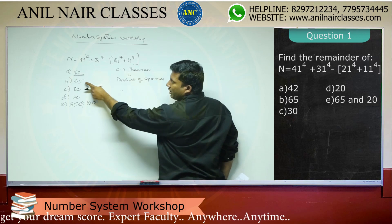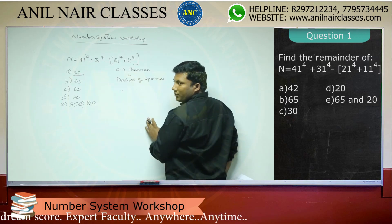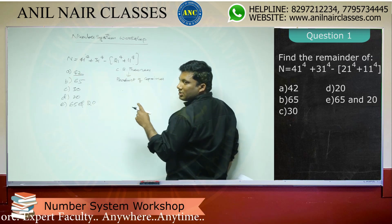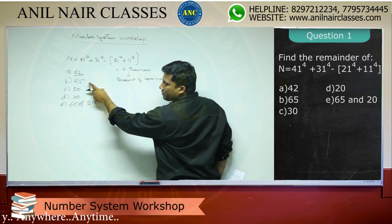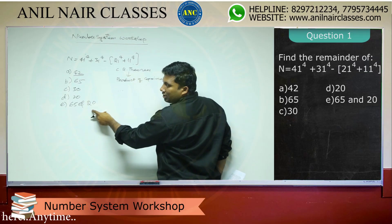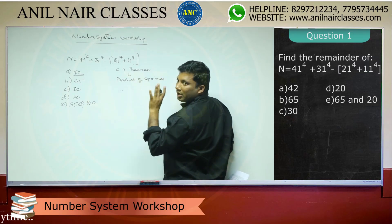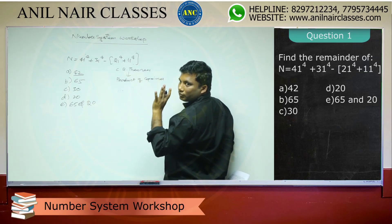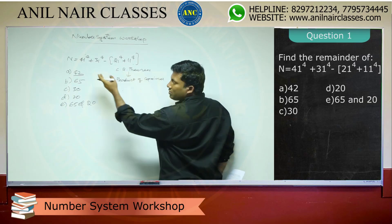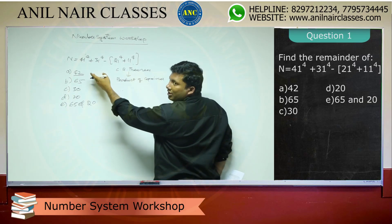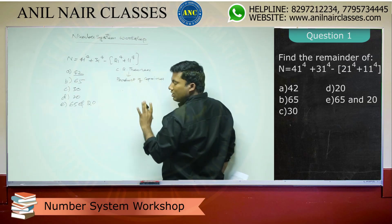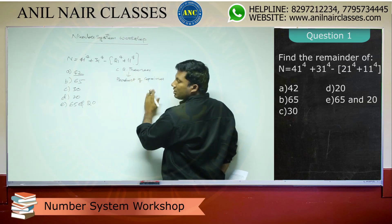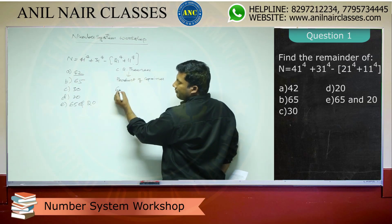I will try to take 65 first. If 65 is incorrect, both option B and option E are eliminated. If I use 42 and 42 is incorrect, only one option is eliminated. So I will start with 65.